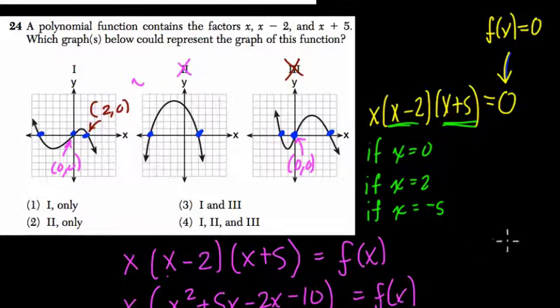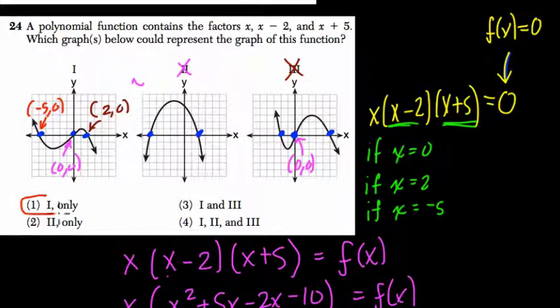If you look at our graph, actually, we have the point here, negative 1, 2, 3, 4, 5, right here. So the point negative 5, 0 would also be a root. So the only one that works is choice 1.